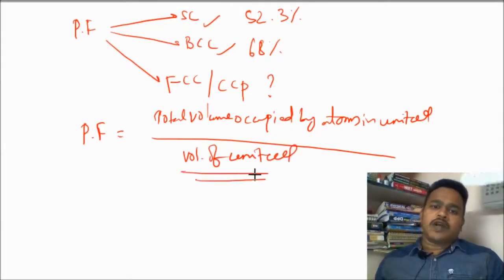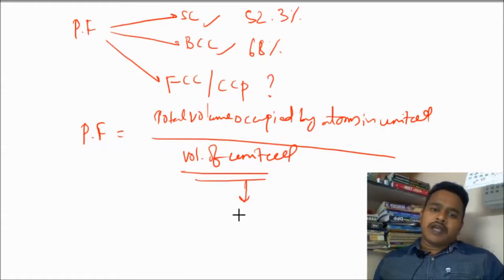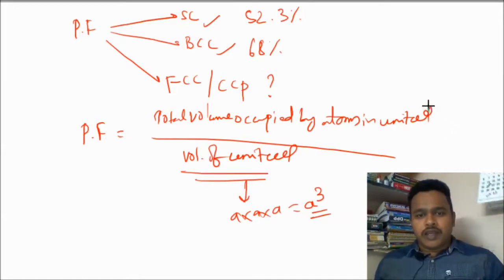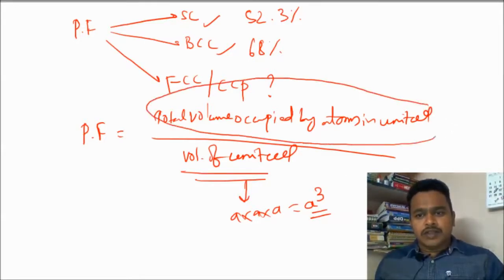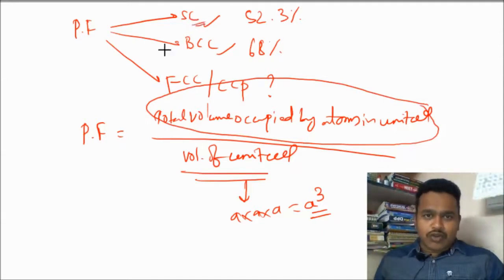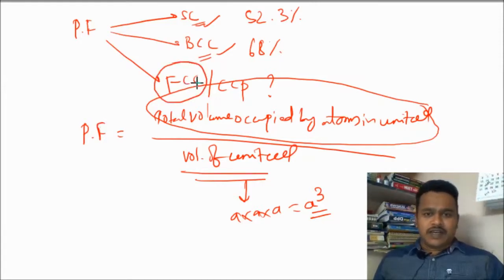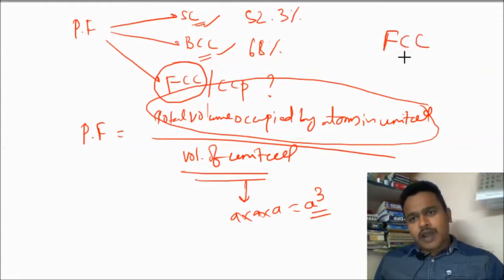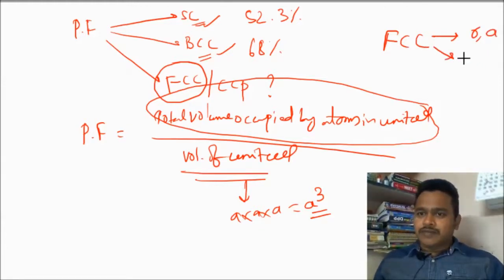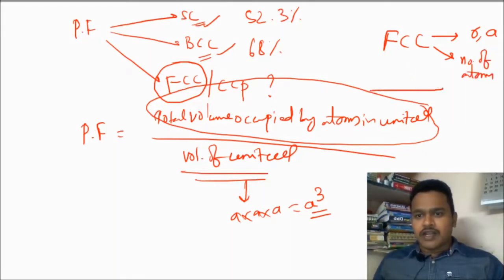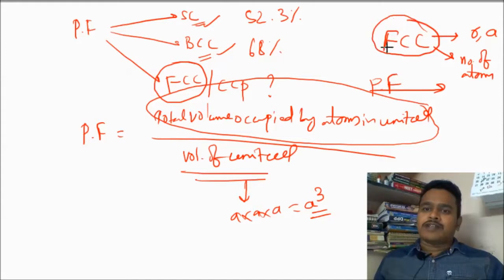The volume of the unit cell is always constant. With edge length A, it is A × A × A = A³. The volume occupied by the atoms in the unit cell is what we need. We already studied for simple cube and BCC. Now we study FCC. We need the R and A relation, then the effective number of atoms in FCC, then apply the packing fraction formula.